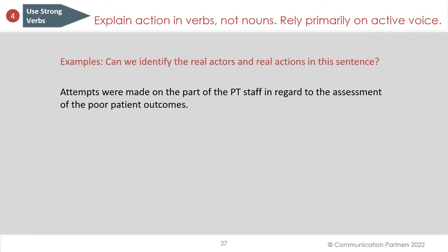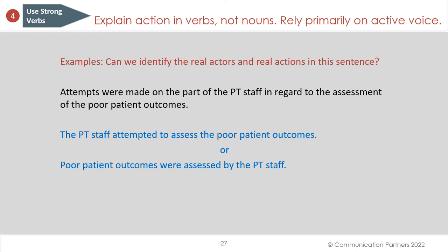Next principle: explain action in verbs, not nouns, and use strong verbs. Rely primarily on the active voice. Can we identify the real actors and real actions in this sentence? 'Attempts were made on the part of the PT staff in regard to the assessment of poor patient outcomes.' We know who's acting — the PT staff attempted to assess the poor patient outcomes. Or in passive: 'poor patient outcomes were assessed by the PT staff.' Either one is much better than the original because in the original we don't know who's doing what to whom.